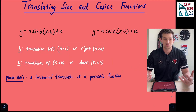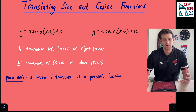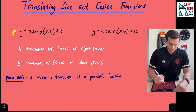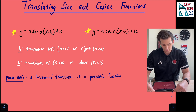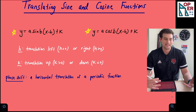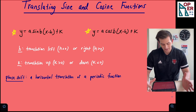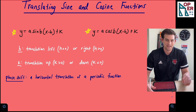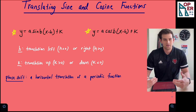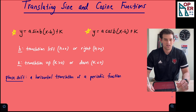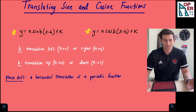Hello everyone, in this video I want to talk about how we can translate some sine and cosine functions. At the top of the screen we have our sine function and our cosine function. We have a and b from a previous video where a is our amplitude and b is our period. And now we have x minus h and plus k, so we have h and k. h and k should be familiar — they are a horizontal and a vertical translation.